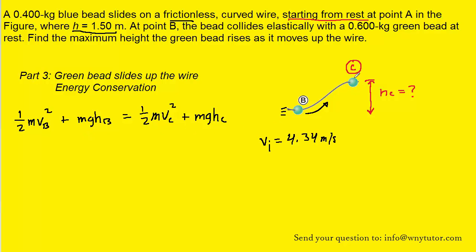Notice in the picture that we have labeled the top of the wire as point C. We know that once the green bead gets up to that point, it will stop, and so its final speed at point C will equal zero. That's going to eliminate this term from the equation.